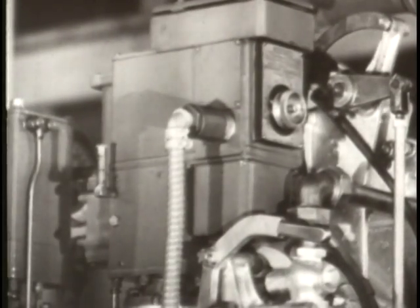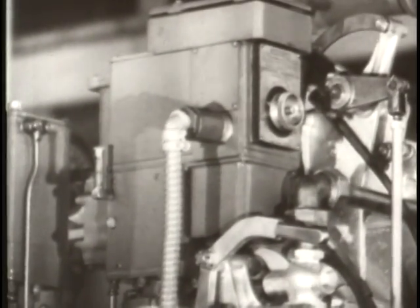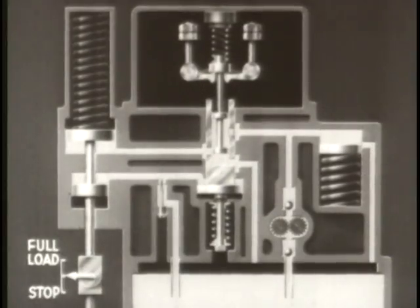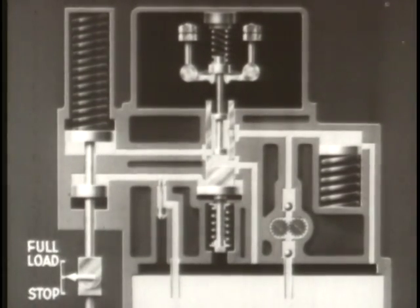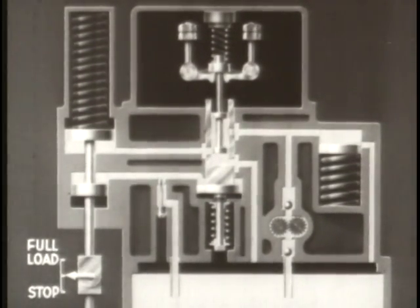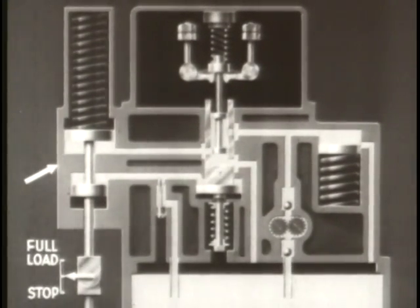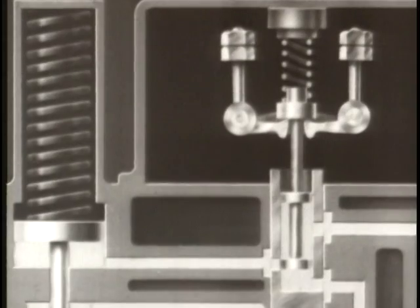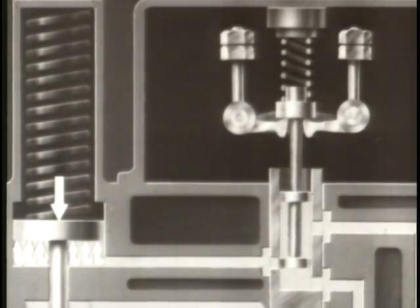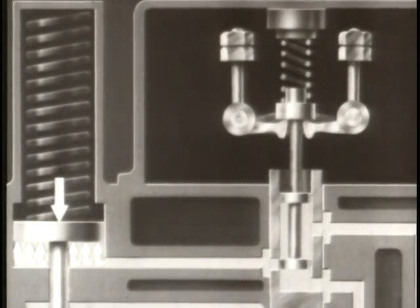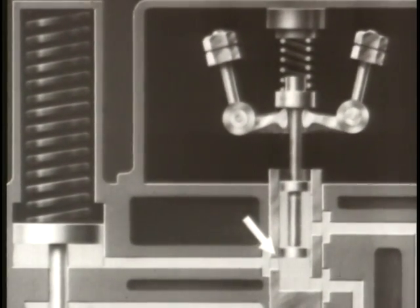The regulating governor not only keeps the engine from overspeeding, but maintains the engine's speed at a fixed rate despite changes in load. In this governor, the flyweights are linked hydraulically to the fuel control assembly. This assembly consists basically of a piston connected to the fuel system controls, a housing, and a spring. The downward pressure of the spring is balanced by oil pressure on the lower side of the piston. The amount of oil in this space is regulated by a valve called the pilot valve, controlled by the flyweights.